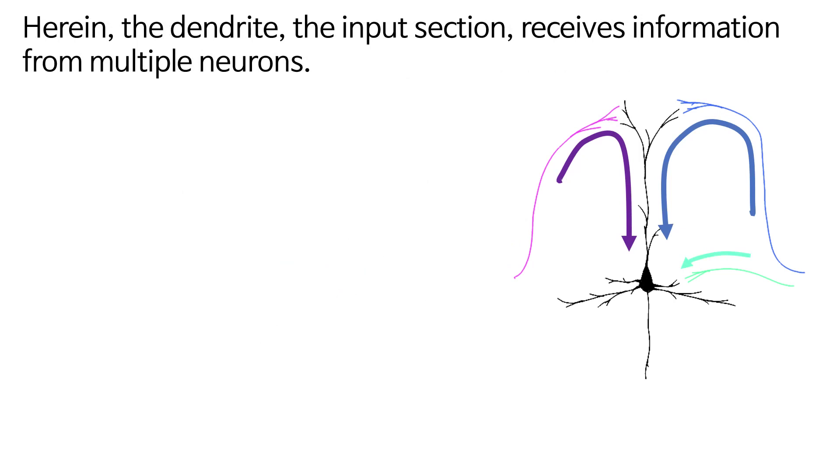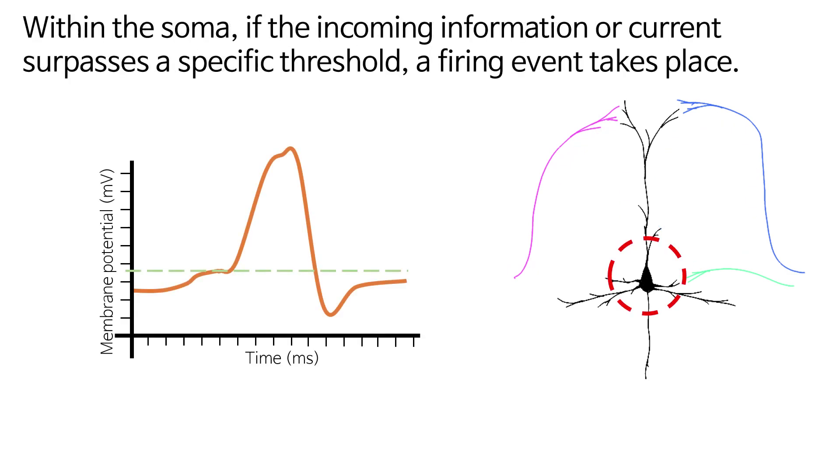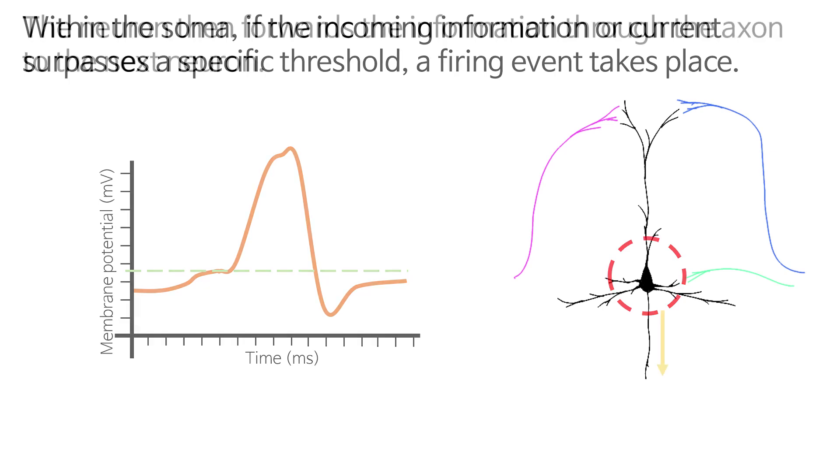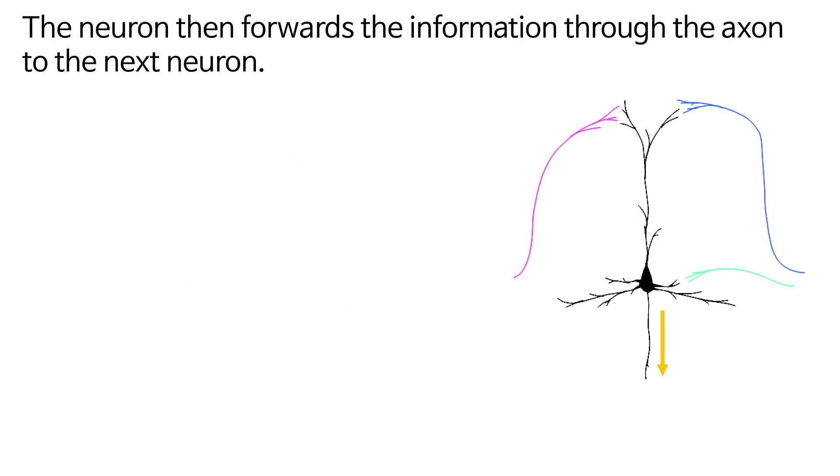Herein, the dendrite, the input section, receives information from multiple neurons. Within the soma, if the incoming information or current surpasses a specific threshold, a firing event takes place. The neuron then forwards the information through the axon to the next neuron.